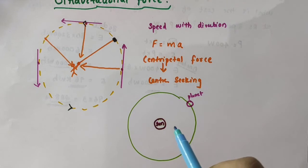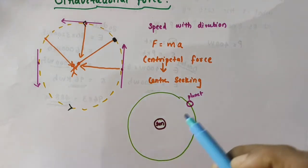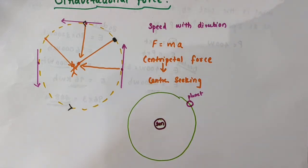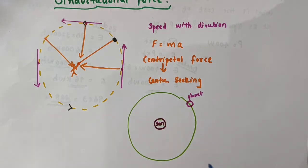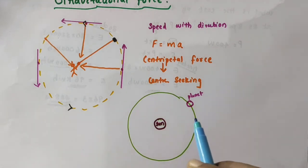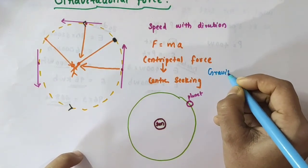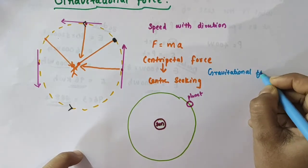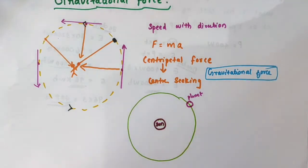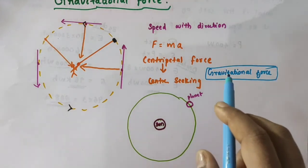All objects having some mass in the universe attract each other. That force of attraction between objects is called gravitational force. For example, a book and a pencil both have some mass, so both are attracting each other, though we cannot observe that force of attraction — we will discuss the reason in our coming videos. All objects having some mass in the universe attract each other, and that force of attraction between them is called gravitational force.